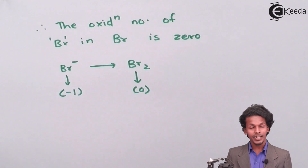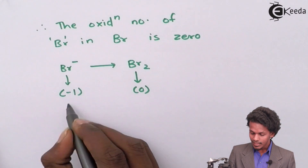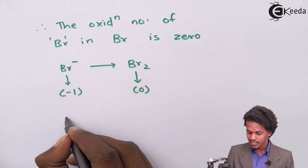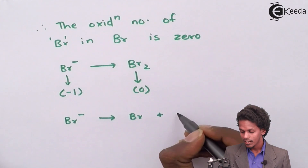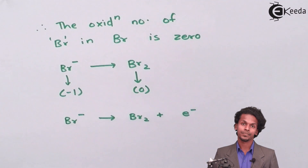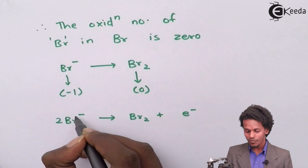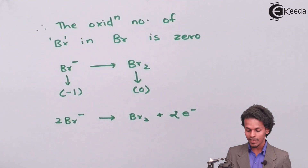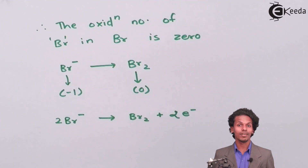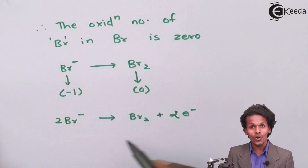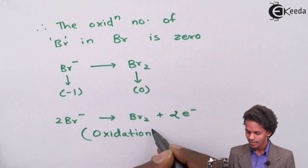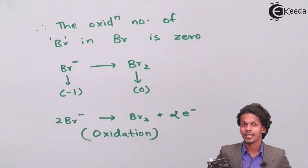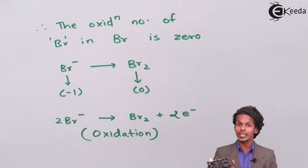To elaborate: Br⁻ with oxidation number −1 converts to oxidation number 0 only if it donates an electron. Since the reaction is unbalanced, we write 2Br⁻ → Br₂ + 2e⁻. Since electrons are being lost by the bromide ions, this is an oxidation process. This is how we can determine whether a reaction is oxidation or reduction using the oxidation number method — as shown through these four examples.